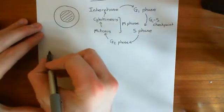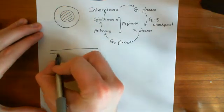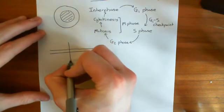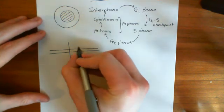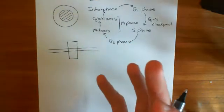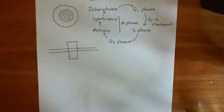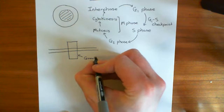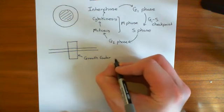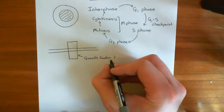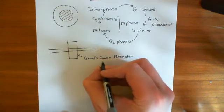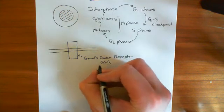Let's say this is the cell membrane of our cell which we want to induce to divide. In the cell membrane, you have a protein known as a growth factor receptor. There are loads of different growth factors and growth factor receptors in the body, and they all basically work in the same way, so we'll keep it general and just call this a growth factor receptor, or GFR.